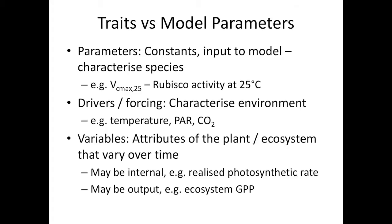My idea of a trait is something that is more constant within a species than across species, and that maps fairly nicely to a model parameter. What I've been trying to get my head around for years is the relationship between traits and model parameters. Models have parameters — constants which characterise the species — as well as drivers like temperature and CO2, and variables which are things the model simulates, like realised photosynthetic rate or ecosystem GPP. There's quite a strong relationship between traits and model parameters.